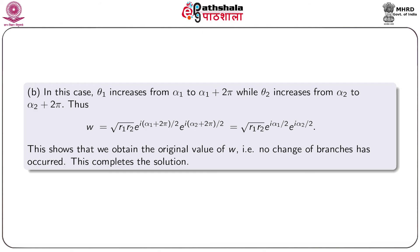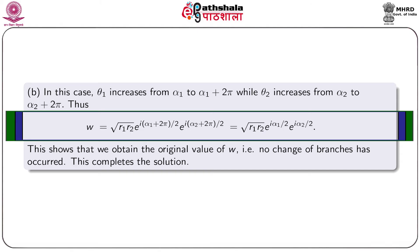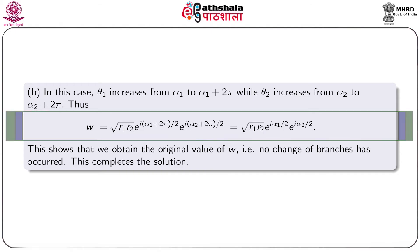In the second case, when the curve C encloses both i and −i, θ₁ increases from α₁ to α₁ + 2π and θ₂ increases from α₂ to α₂ + 2π. Therefore w = √(r₁r₂) · e^(i(α₁+2π)/2) · e^(i(α₂+2π)/2) = √(r₁r₂) · e^(iα₁/2) · e^(iα₂/2), which is the original value of w. This means no change of branches has occurred, completing the solution.